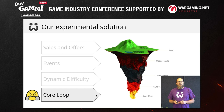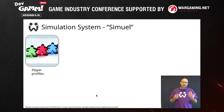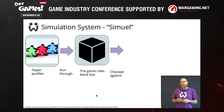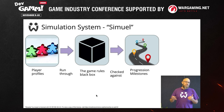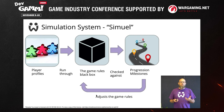We've talked about the problem space of personalizing within the core loop. Now I'm excited to tell you about our experimental solution — it's still early days, we're in the middle of production, but so far the results are very promising. I'd like to introduce you to SimWell, our simulation system. It starts with player profiles — essentially how we think players are going to play. We run them through the game rules as a black box, which is the actual game in simplified form. Then we check it against progression milestones we think the player should hit at a particular point. If players aren't meeting the milestones we think they should, we go back and tweak the game rules and run it again. So we're really running players through simulations of the game.